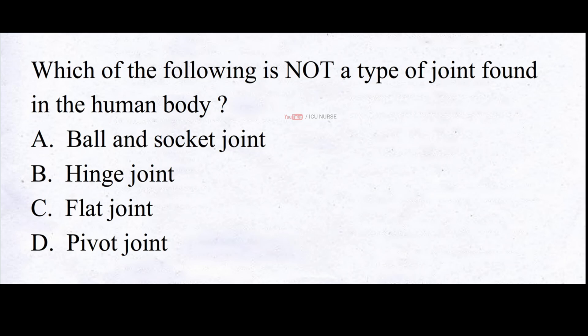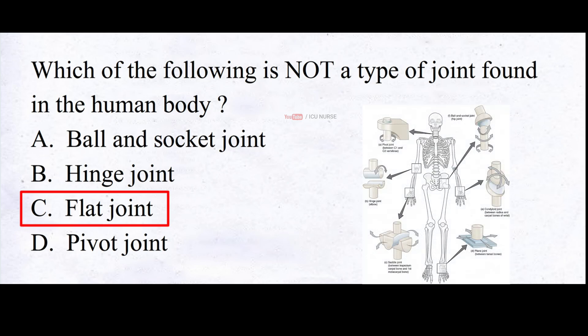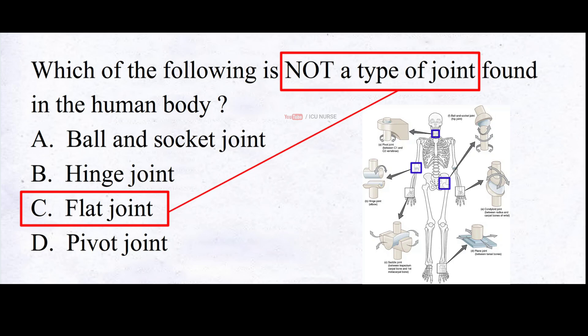Which of the following is not a type of joint found in the human body? A. Ball and socket joint, B. Hinge joint, C. Flat joint, D. Pivot joint. And the correct answer is C. Flat joint. Ball and socket joint, hinge joint, and pivot joint are all different types of joints in the human body, whereas flat joint is not a type of joint.